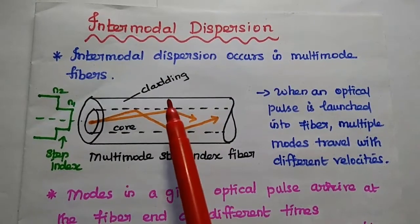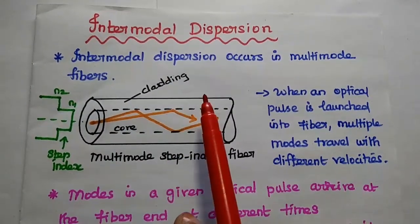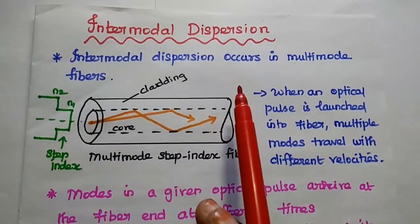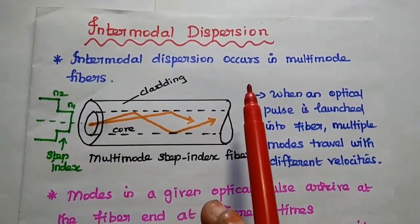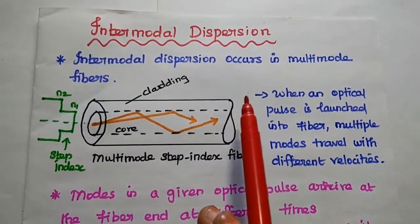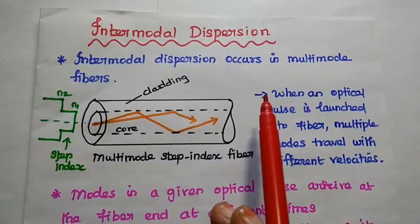Dear students, now we are going to discuss intermodal dispersion in detail. Dispersion represents the spreading of light while propagating through the fiber. It is the loss of the light during propagation along the fiber.